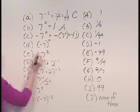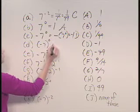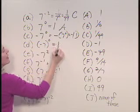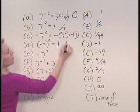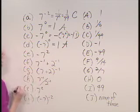For the next problem, negative 7 raised to the 0 power, once again, anything raised to the 0 power is equal to 1, so once again, this would be selection a.